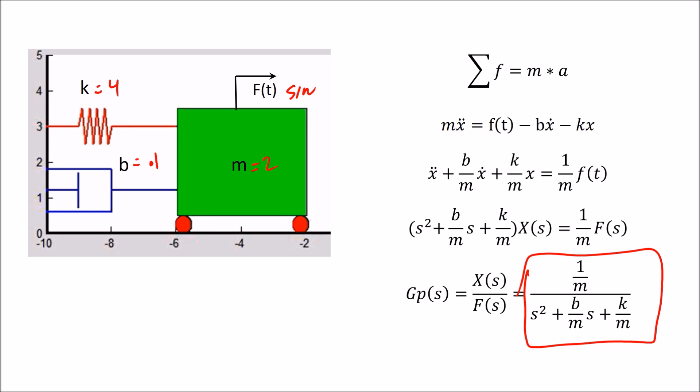We'll call that Gp(s) equals X(s), and it's equal to this quantity right here. And what that means is in my block diagram, if I have some F(s), some force, and I input that into a block which we will call Gp(s), I will get as an output X(s). Okay?